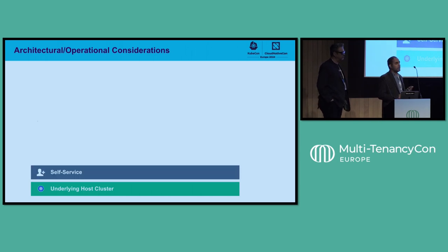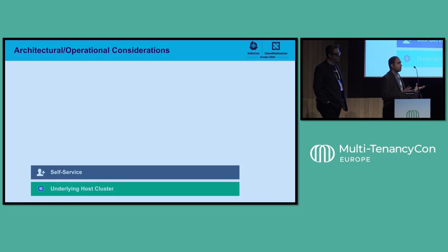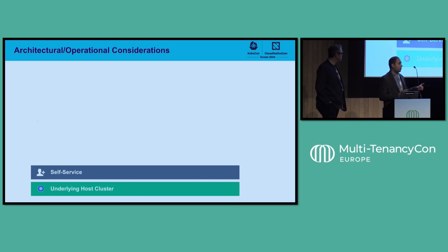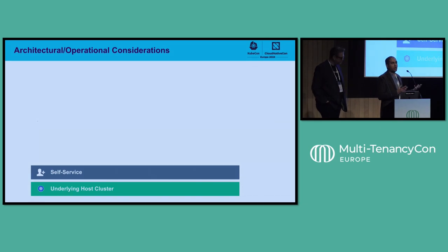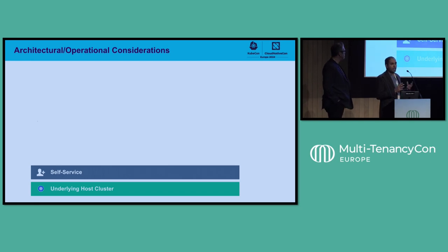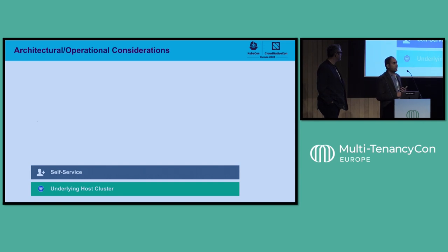The second thing is self-service. An important aspect is what kind of self-service do you want to implement, and if yes, what shape and form should it be? You have to think about the self-service interface — is it going to be Backstage, is it going to be a CMDB? And if you're going to provide namespace as a service, how are your users going to create a namespace, and how do you make sure they don't have cluster-wide privileges?